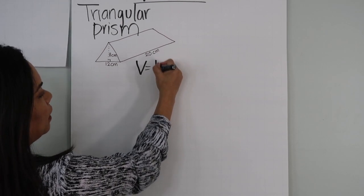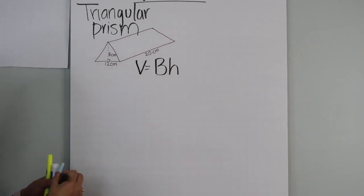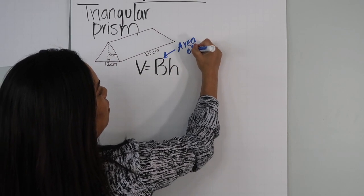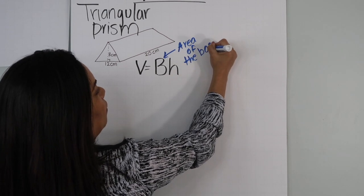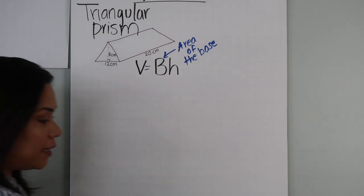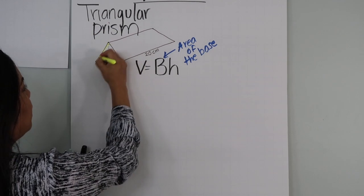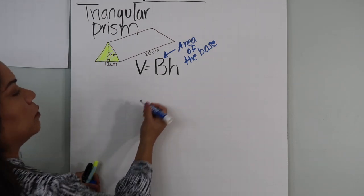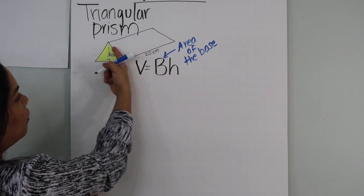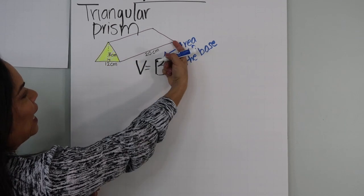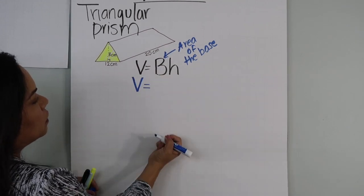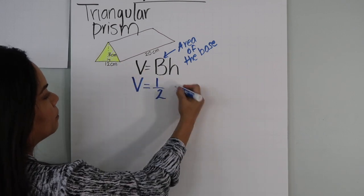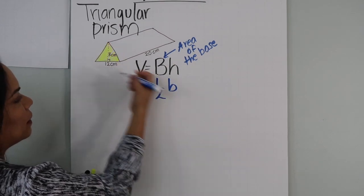The formula for the triangular prism is V equals capital B times H. Capital B is the area of the base. The base in this problem is the triangle. So to find the volume, we're going to find the area of the triangle first, then multiply it times the height of the triangular prism. The area of the triangle is one-half times the base of the triangle times the height of the triangle.